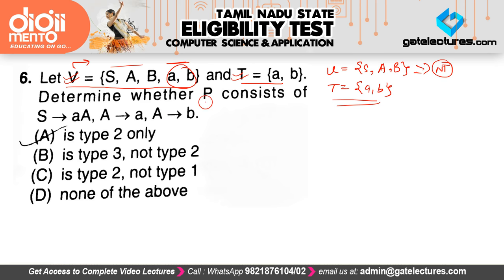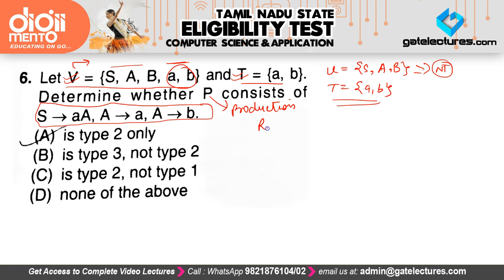Now they are saying determine whether P — the production rules — satisfy a certain grammar type. They are asking what type of grammar it is: is it Type 0, Type 1, Type 2, or Type 3?